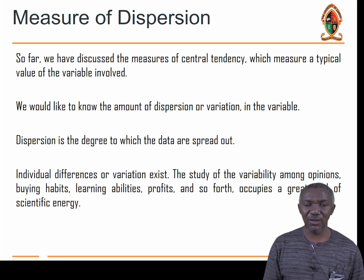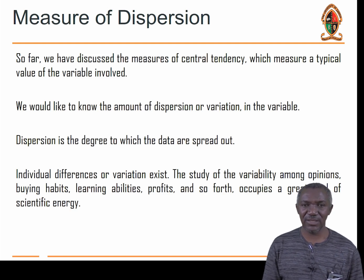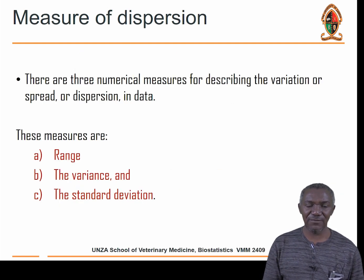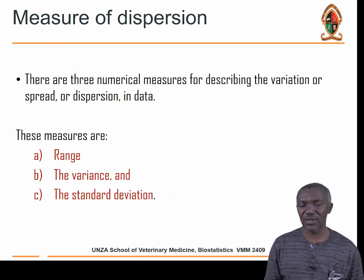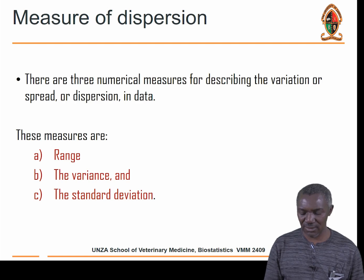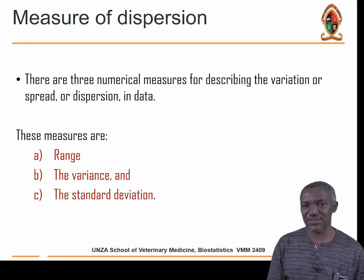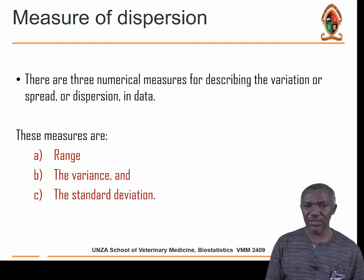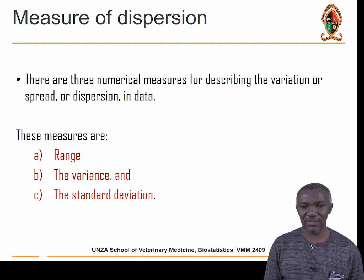For measuring dispersion, there are three parameters commonly used: the range, the variance, and the standard deviation. Of course, you can also use percentile range and other measures like the confidence interval, but these three are the most common.